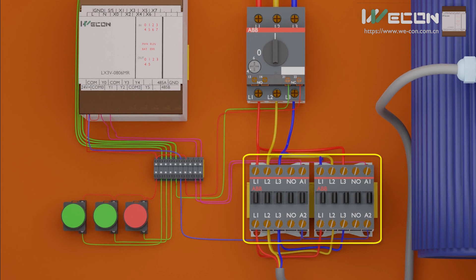Moving forward, we have two contactors which will be used to provide power to the motor. The forward contactor is connected at the Y0 output of the PLC, and the reverse contactor is connected at the Y1 output of the PLC.